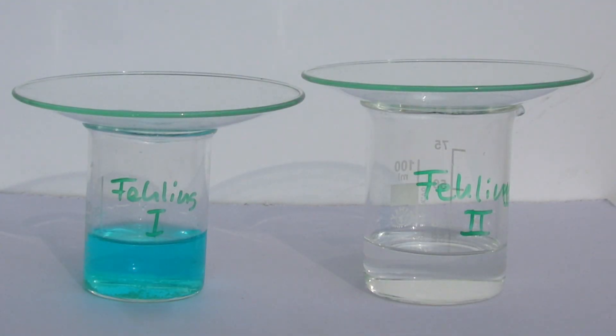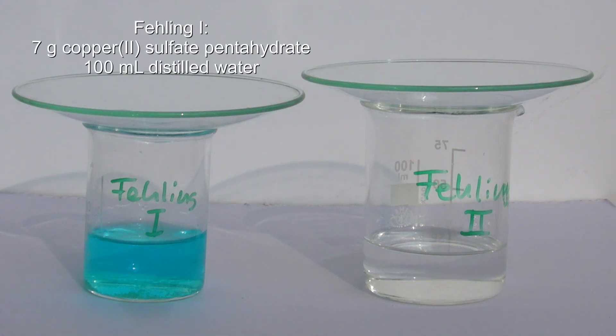For the Fehling's Test, two aqueous solutions are prepared, which are called Fehling's 1 and 2. Fehling's 1 is made of 7 grams of copper sulfate and 100 milliliters of distilled water.